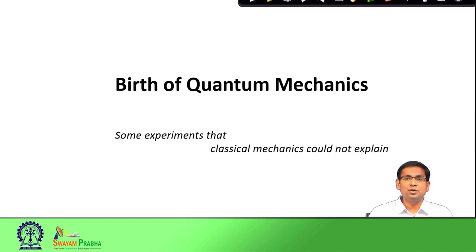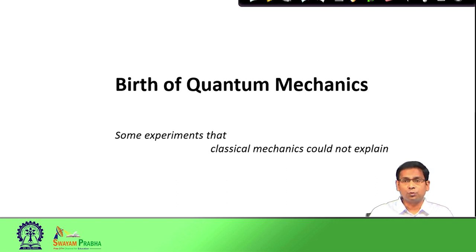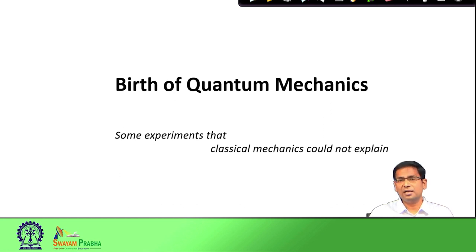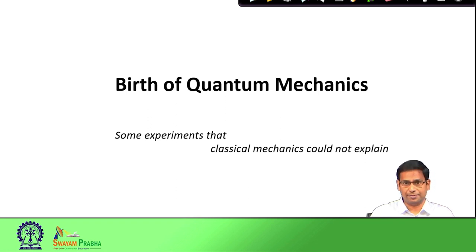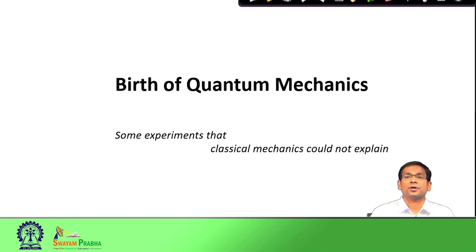These two fields introduced many new terminologies in the language of science and brought forth many interesting ideas which were unheard of before. For example, the theory of relativity talked about time dilation and space-time warp, while quantum theory talked about uncertainty and wave-particle duality. Together, these two fields revolutionized science. Although the theory of relativity has had very little influence on chemistry — except for relativistic effects in heavy elements — quantum theory had a profound influence, making quantum chemistry an integral part of any chemistry curriculum.